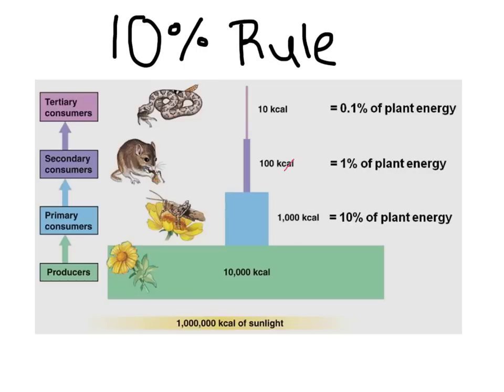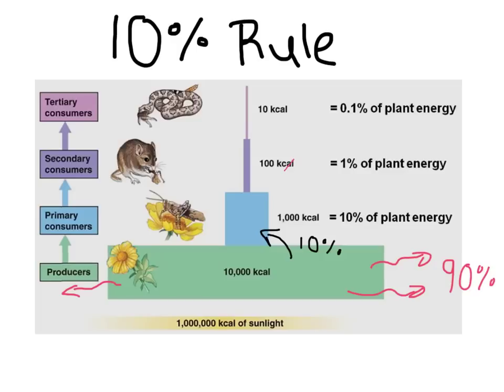For example, let's say there's a field of producers that captures 10,000 kilocalories worth of sunlight by photosynthesis. They end up using themselves 90% of that energy, and when the grasshopper gets to eating them, it only gets 10% moving to the next level. So there's our 10% that the grasshopper received — 90% of it was used by the plants during their lifetimes in order to grow and reproduce. And then the pattern repeats itself to the next trophic level and to the next trophic level, so that by the time you get to the tertiary consumers, you only have 0.1% of the energy that was originally captured by the plants.